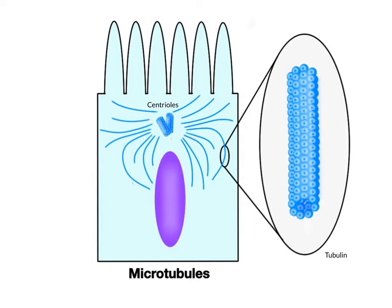Microtubules are also involved in cell division. They are produced by extensions of the cytoskeleton called centrioles, which help assemble and organize microtubules. As the centrioles assemble the microtubules during cell division, spindle fibers develop, which consist of microtubules that attach to the centromeres of the sister chromatids and help separate them during the various stages of mitosis and meiosis.